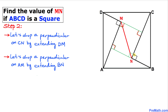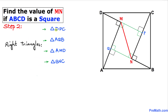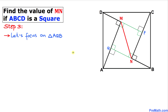All these angles are 90 degrees. Moreover, all these triangles — DPC, AQB, AMD, and BNC — are right triangles, as we can see in the figure.